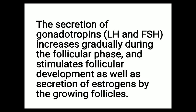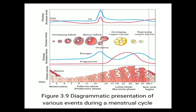The secretion of gonadotropins LH and FSH increases gradually during the follicular phase. LH (luteinizing hormone) and FSH (follicle-stimulating hormone) concentrations gradually increase. These hormones stimulate follicular development as well as secretion of estrogen by the growing follicles. The estrogen is secreted by the developing follicles inside the ovary.